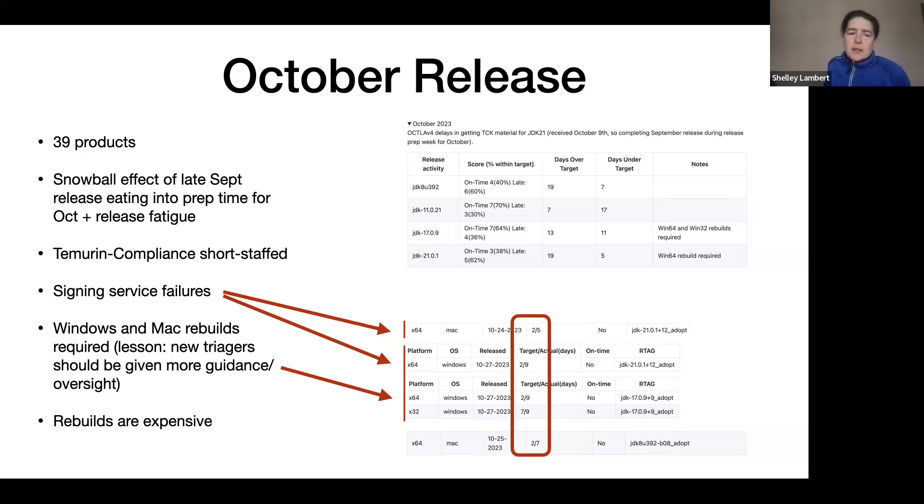In both the case where we're signing as part of the build and the case where we're signing to notarize installers, when we send things off to the Eclipse signing service, things were failing. And the issue is that not only were they failing, but we weren't noticing they were failing. So that caused us to need to do rebuilds, and rebuilds are very expensive.